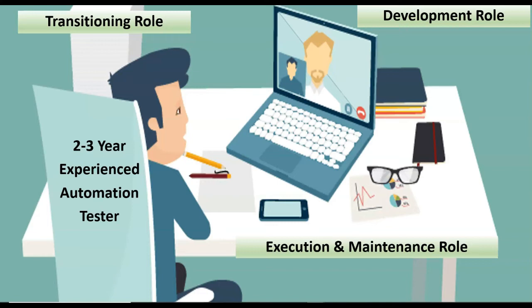If there is a failure in the automation scripts, the manual team will come to you, and as part of maintenance you need to fix those. Execute scripts for every release and perform failure analysis — debugging failed scripts to determine whether it is a bug, a script problem, or a changed locator. After completing failure analysis, prepare the execution report, which the lead sends to the client copying the manager. Code reviews, code correction, and framework maintenance are generally done by the senior automation engineer or the lead.